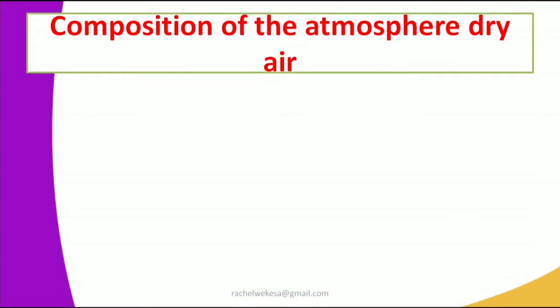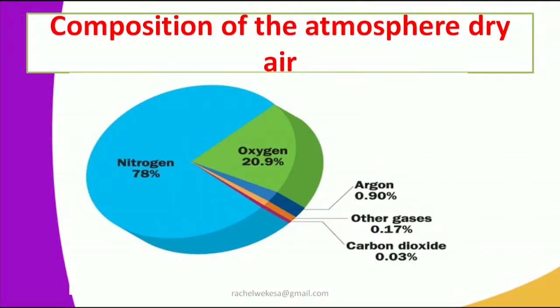Let's look at the composition of the atmosphere — dry air. On our diagram, we have different amounts of air shown. The largest component is nitrogen at 78%, followed by oxygen at 20.9%. We also have argon, shown in blue, at 0.90%, other gases in orange at 0.17%, and the least amount is carbon dioxide at 0.03%.